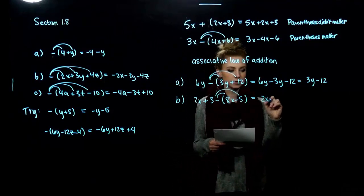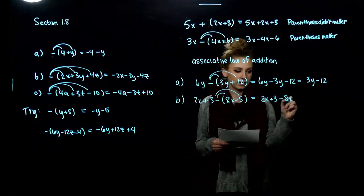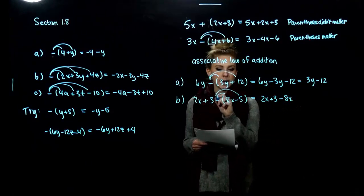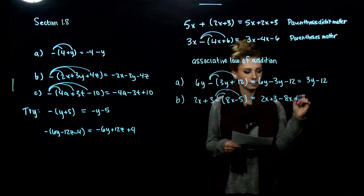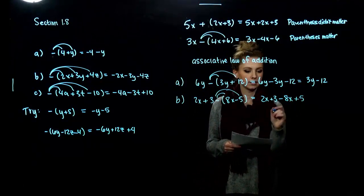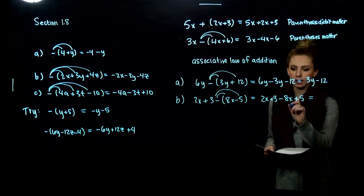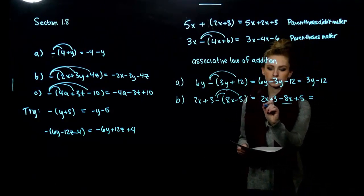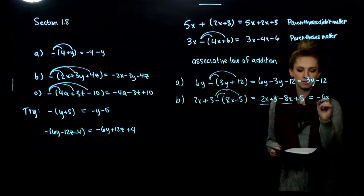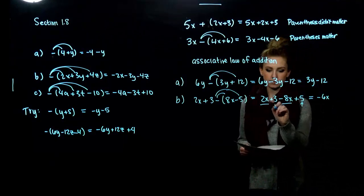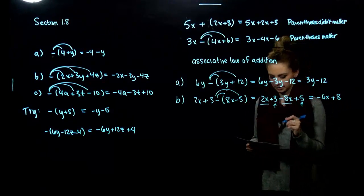2x plus 3, that's not changing. Then minus 8x — minus times a minus gives us a plus — so plus 5 on the end. Again, we can combine our like terms. Altogether, how many factors of x? Negative 6 of them. And the constants add together to give 8 on the back, so we get negative 6x plus 8.